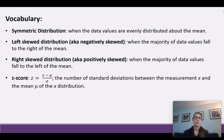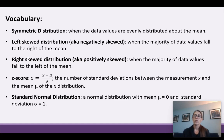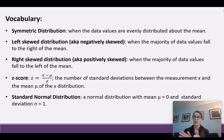A z-score — we've seen this before. The formula is: z-score equals the value minus mu (the mean), divided by sigma (the standard deviation). That's the number of standard deviations between the measurement x and the mean mu of that distribution. The standard normal distribution is a normal distribution where the mean is zero and the standard deviation is one.